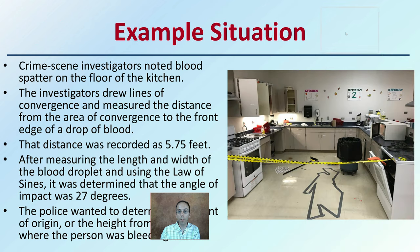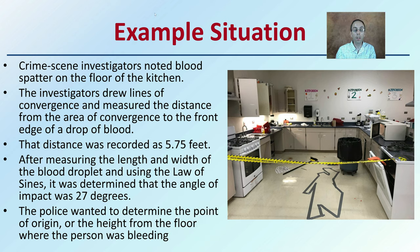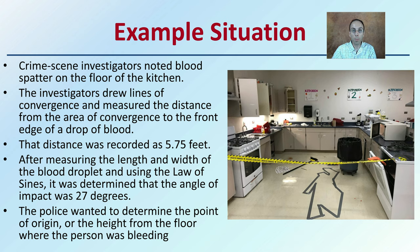Let's apply this to an example. At a crime scene, investigators noted blood spatter on the floor of a kitchen. They drew lines of convergence and measured the distance from the area of convergence to the front edge of the drop of blood — that distance was recorded as 5.75 feet. After measuring the length and width of the blood droplet using the law of sines, it was determined the angle of impact was 27 degrees.